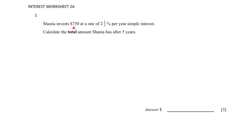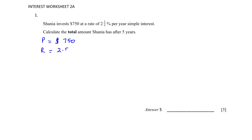Question 1: Shania invests $750 at a rate of 2.5% per year simple interest. Calculate the total amount Shania has after five years. This is a very easy question worth three marks. We have been given the principal which is $750, the rate of interest which is 2.5, and the time in years which is 5.